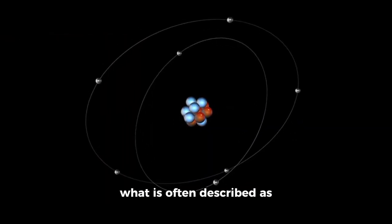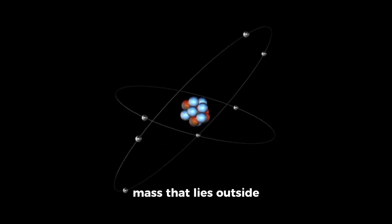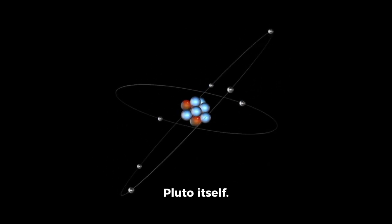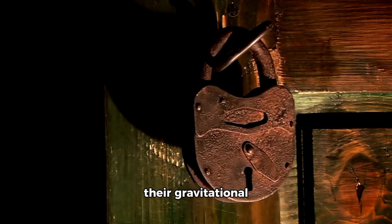With a common center of mass that lies outside Pluto itself, they are locked tidally, forever showing the same face to one another, and their gravitational interactions may help maintain heating by stretching Pluto's interior.